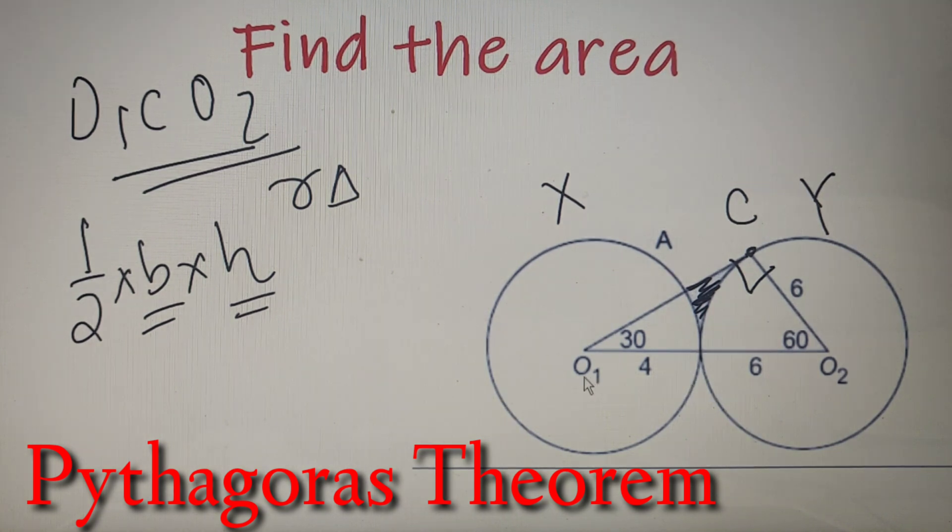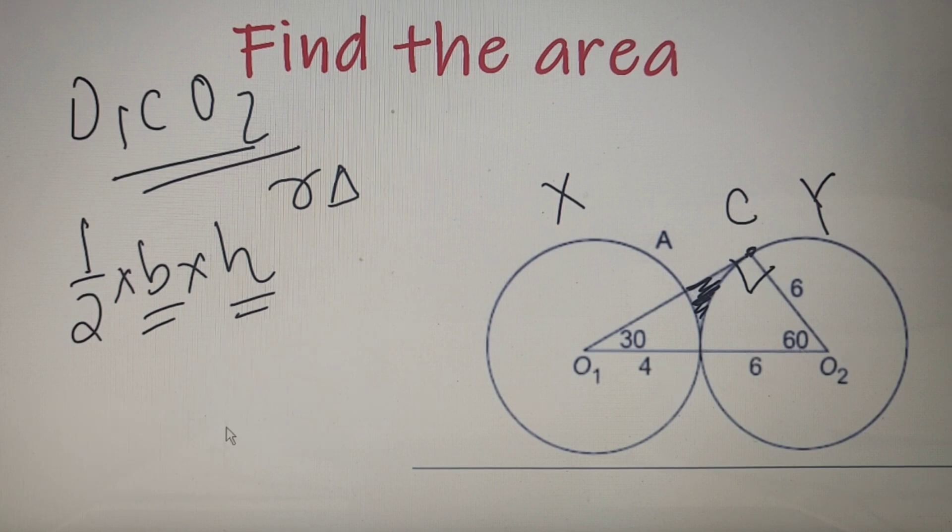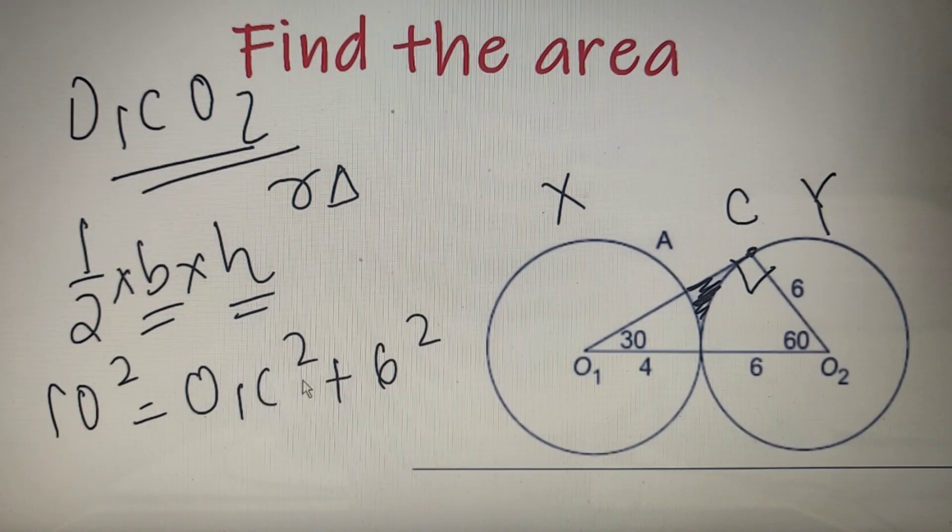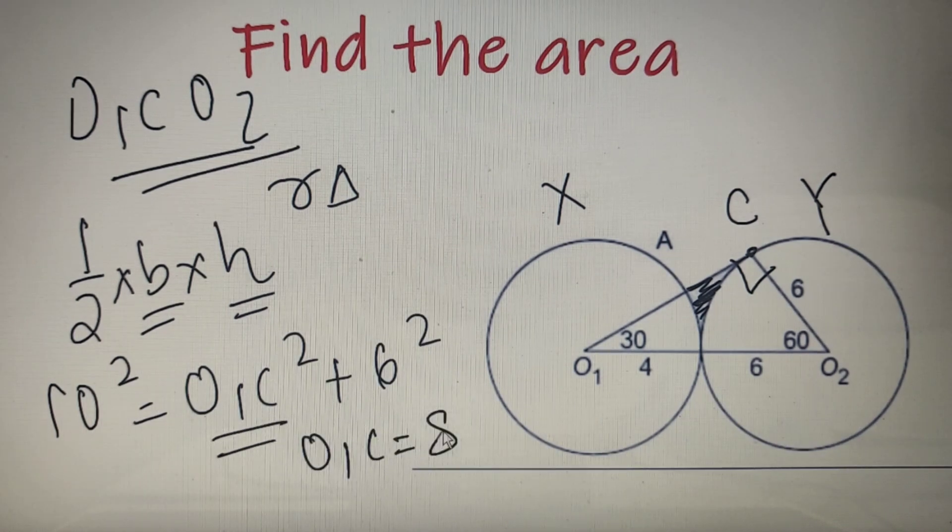According to the Pythagoras theorem, I can say that 4 plus 6 whole square - that is equal to 10 square - equals O1C whole square plus 6 square. So after calculation, we will find that the side O1C is equal to 8 units.